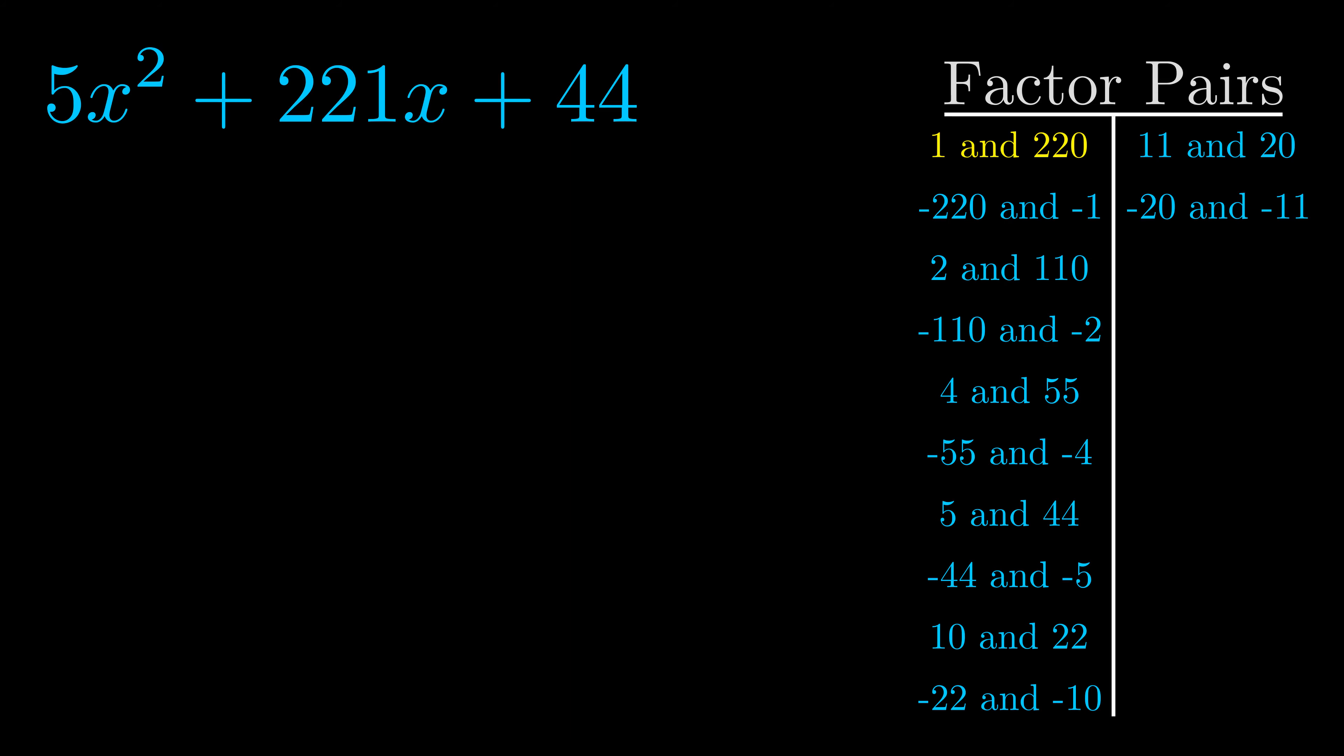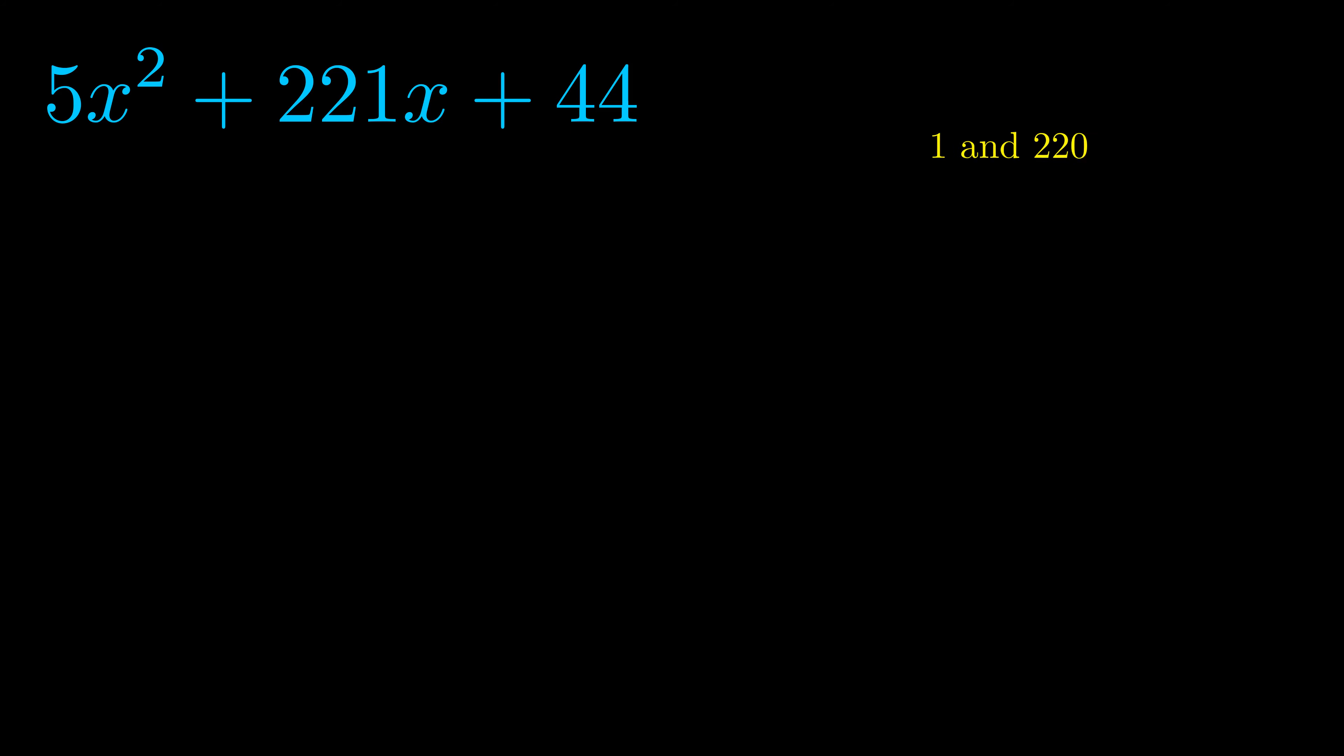And really this is the only factor pair that we need. Now once we have this factor pair what we want to do is use it to split up the b value.